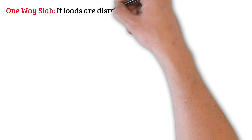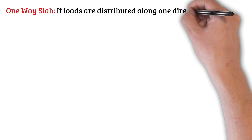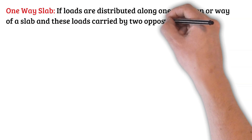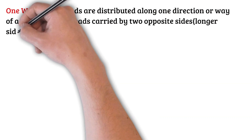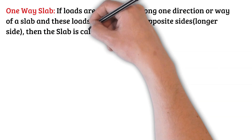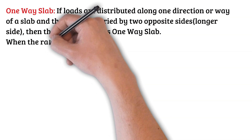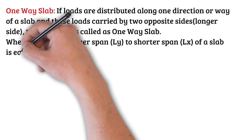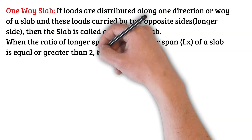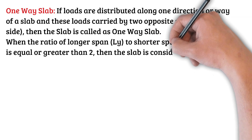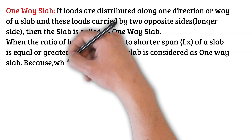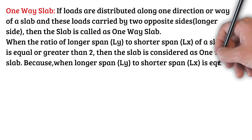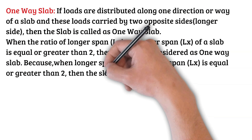One-way slab: if loads are distributed along one direction of a slab and these loads are carried by two opposite sides — that means the longer side — then the slab is called a one-way slab. When the ratio of longer span ly to shorter span lx of a slab is equal to or greater than two, then the slab is considered a one-way slab.